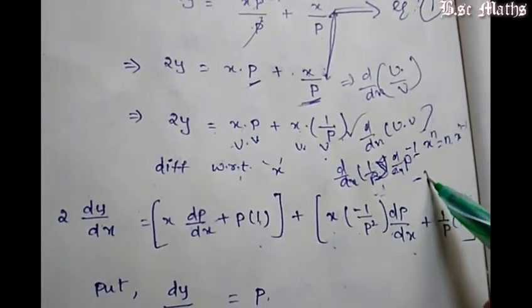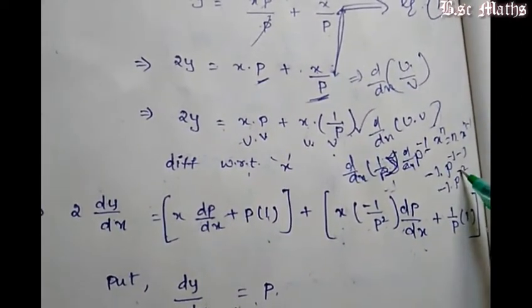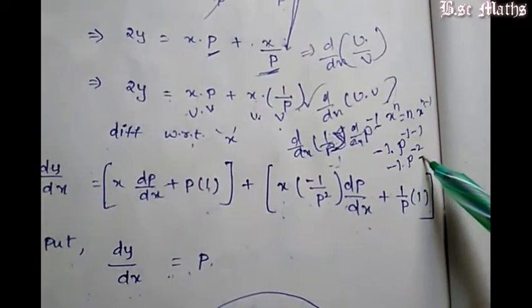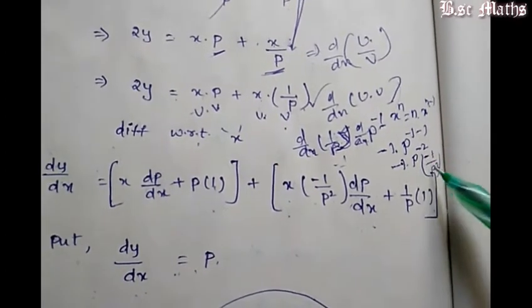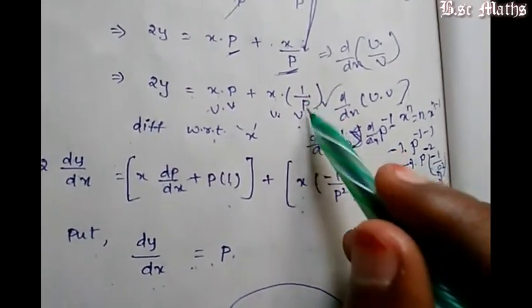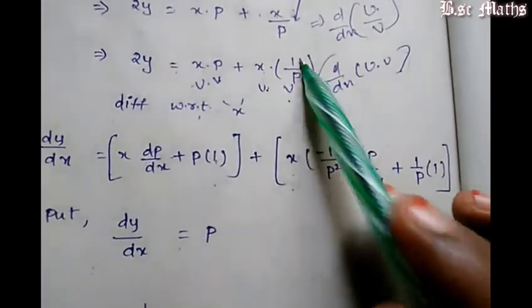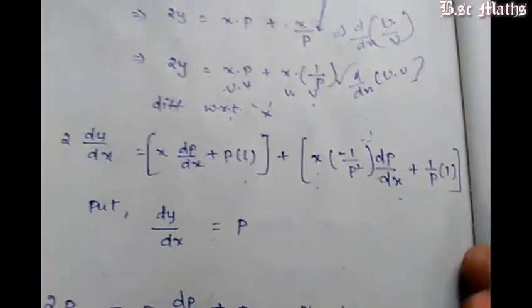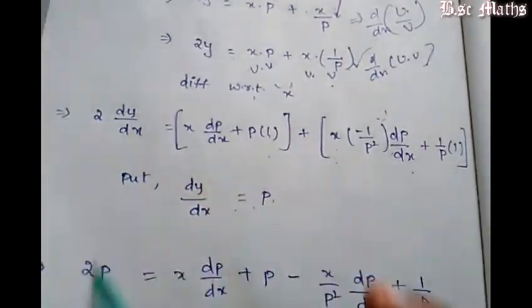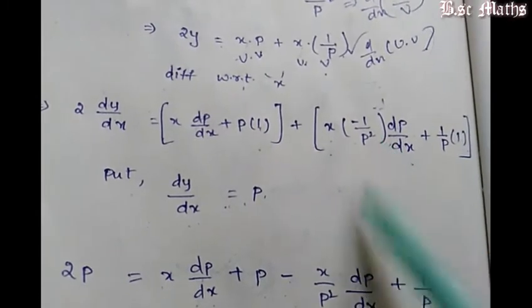This is d by dx of x to the power n formula as n into x power n minus 1. So this is minus 1 into p power minus 1 minus 1, which is minus 1 by p squared. Now dp by dx plus 1 by p into x into dp by dx.